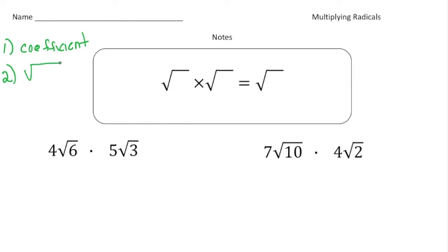Then you multiply the radicals, the values inside the radical signs, so the square root sign. And then finally you simplify if possible. So first you multiply the coefficients, then you multiply the radical signs, and then you simplify.